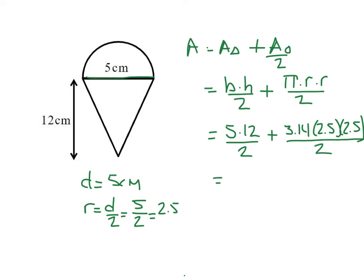Now I've got a lot of math to put into my calculator. So I'll start with the first area, which would be the area of the triangle. I have 5 times 12 divided by 2. That is 30. Now to that, I'm going to add 3.14 times 2.5 times 2.5 equals, and then divide by 2. And this is a pretty big number. I have 9.8125.